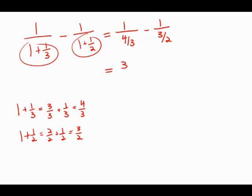So one over four-thirds is three-quarters. And one over three-halves is two-thirds.